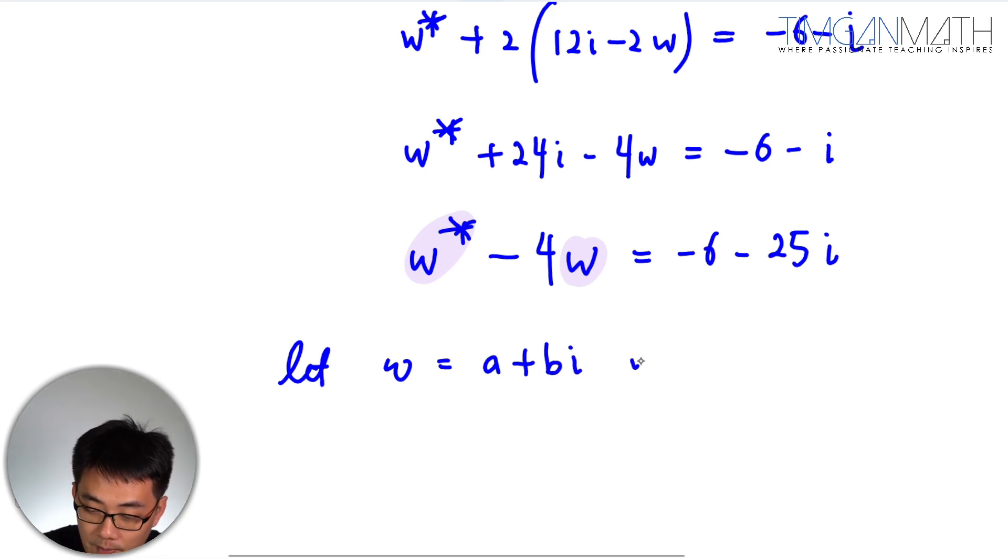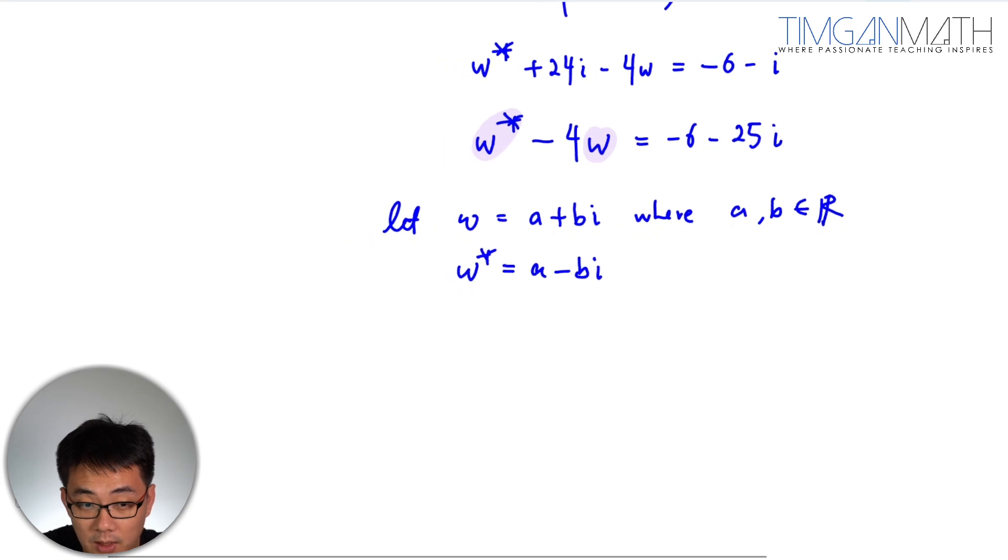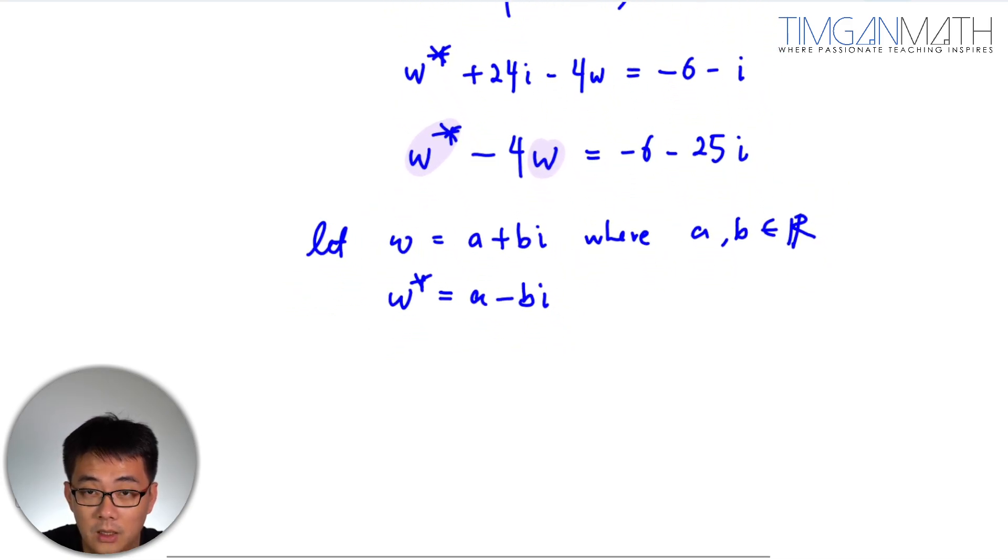Where, remember, if W equals a plus bi, a and b have to be real. Remember that. So if W is a plus bi, then the conjugate will be a minus bi. You just flip the b to negative.